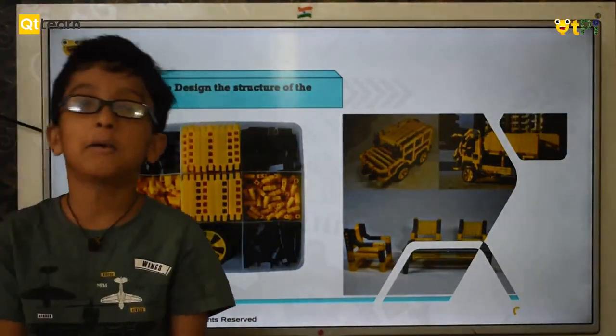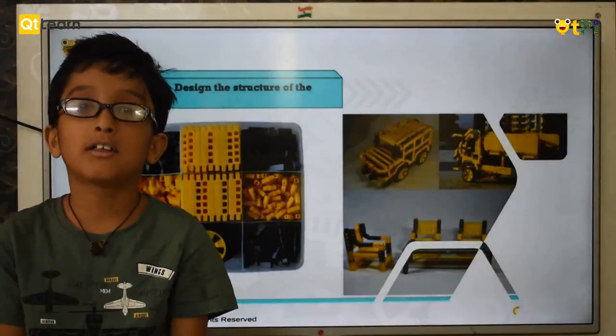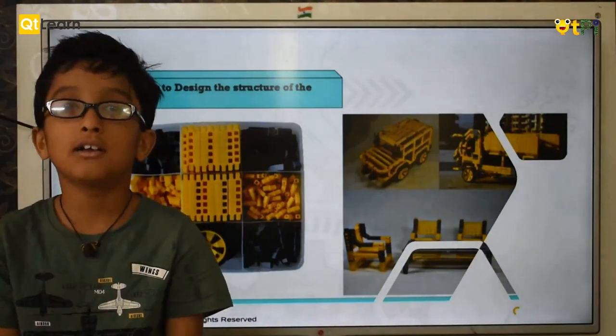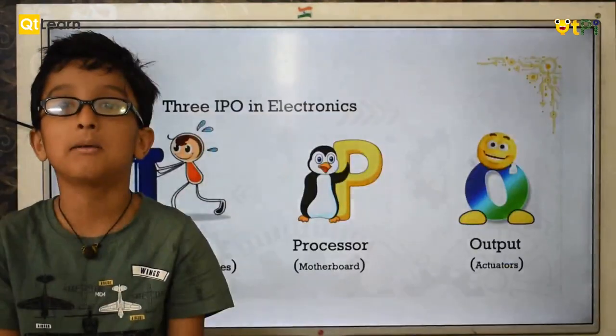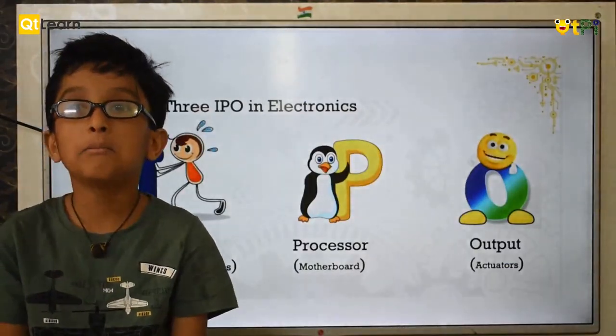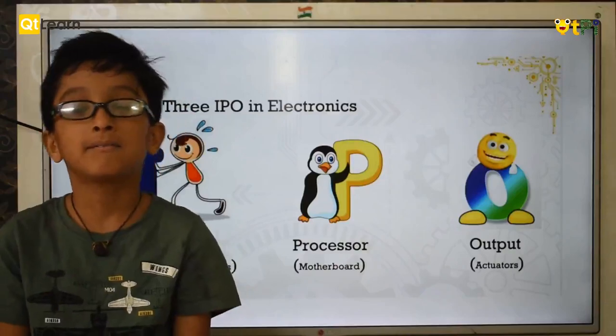Now let's jump to Electronics. Electronics has three main parts: Input, Processor, and Output.